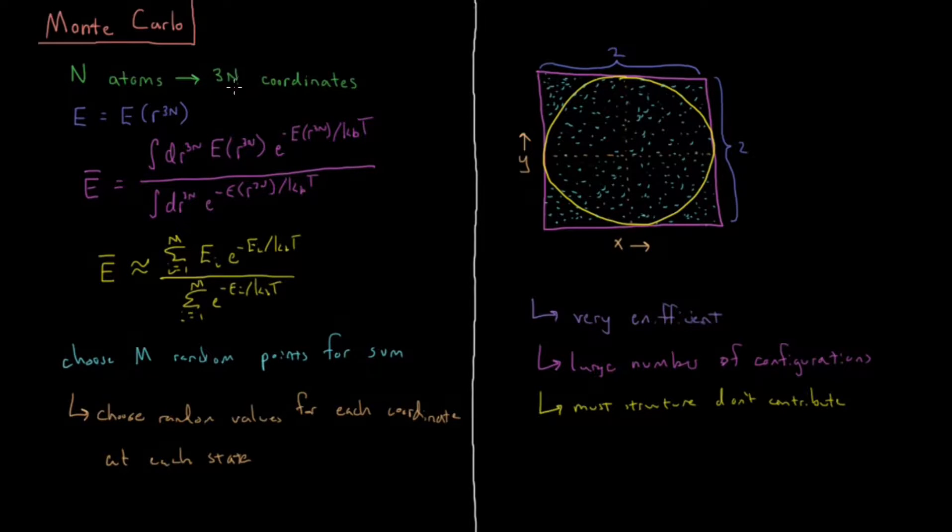And most of the coordinates have those two atoms being not that close to each other. So if there's a chemical bond, that's a lot of the coordinate space we can already reject. And typically in molecules, there are lots of bonds. There are lots of bond angles, lots of torsions. So just the structure of molecules themselves mean that most structures don't contribute because they're very high in energy.